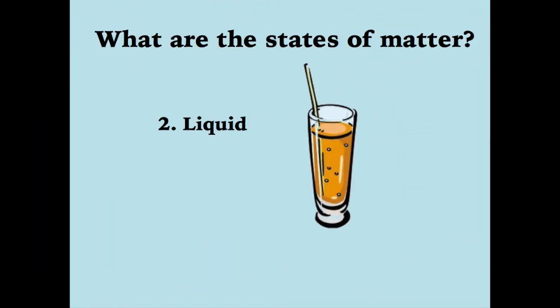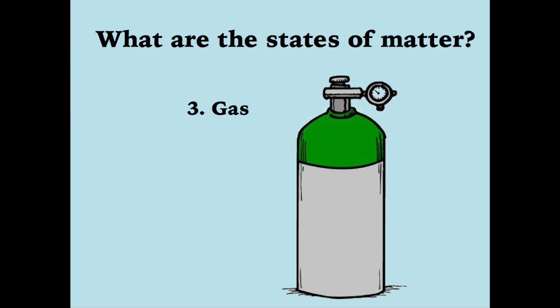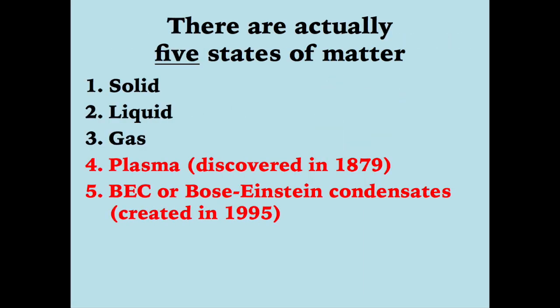There are actually five states of matter: Solid, Liquid, Gas, Plasma — discovered in 1879 — and BEC, or Bose-Einstein Condensates, created in 1995.